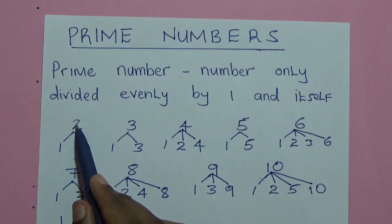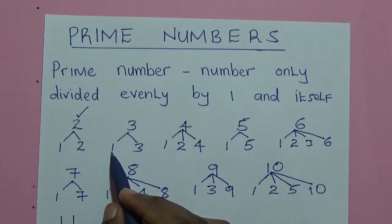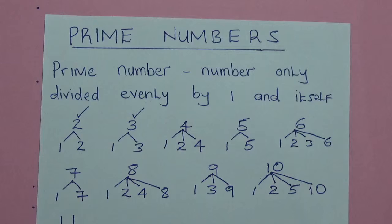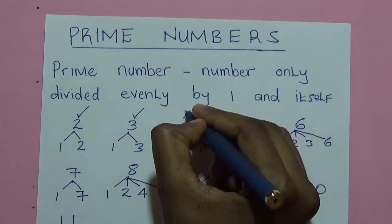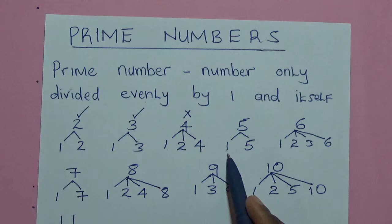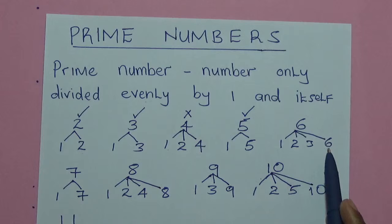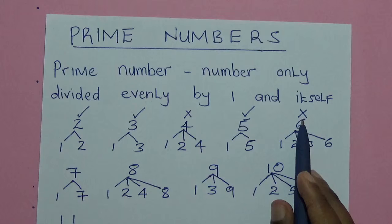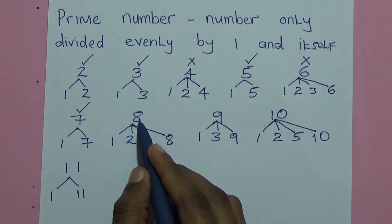So we look at these numbers. 2 can only be divided by 1 and itself, so this one is a prime number. 3 can only be divided by 1 and itself, therefore it is also a prime number. 4 can be divided by 1, also by 2, and by itself, so this one is not a prime number. 5 can only be divided by 1 and itself, so it is a prime number. 6 can be divided by 1, 2, 3, and 6, so this one is not a prime number. 7 can only be divided by 1 and 7, therefore it is a prime number.